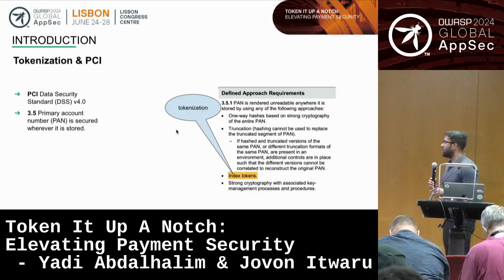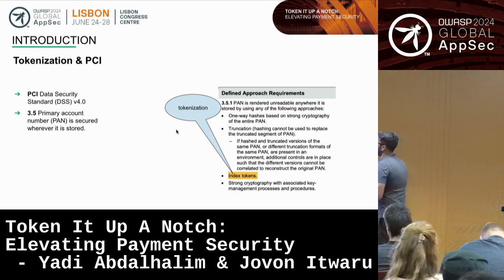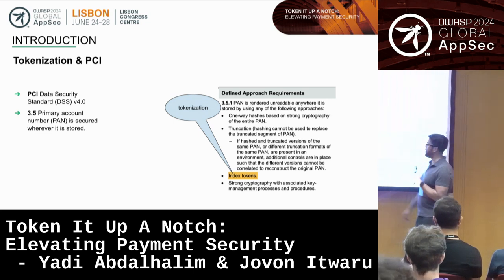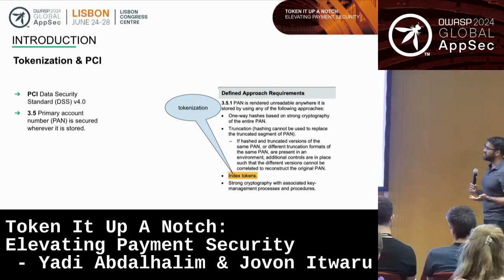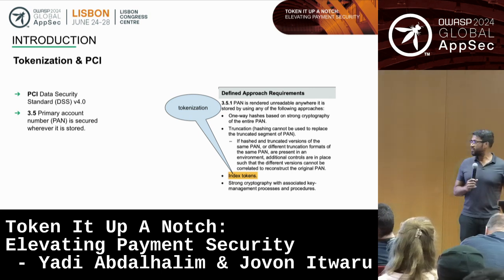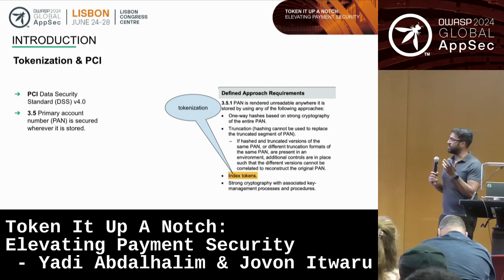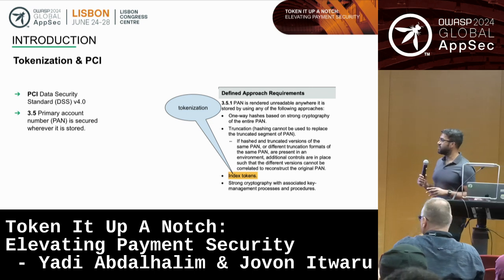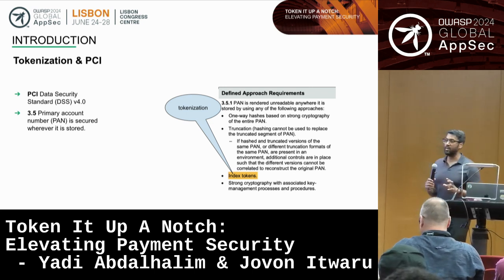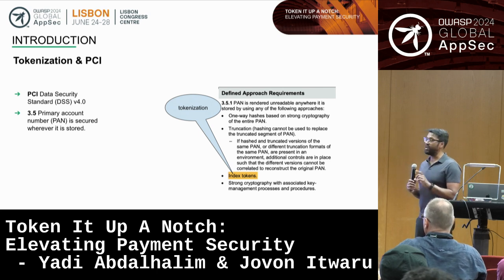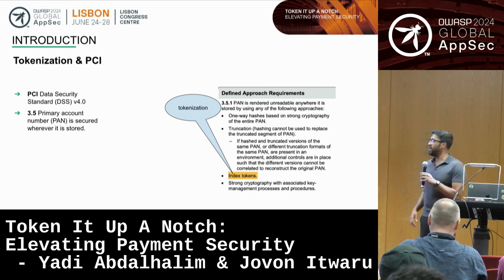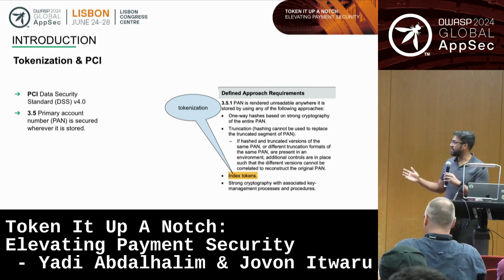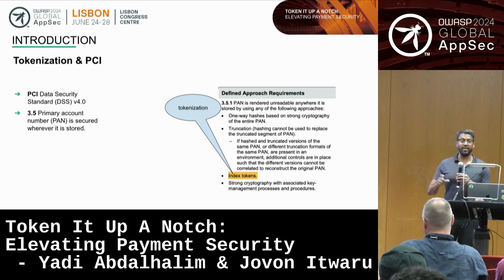The biggest thing to understand is something called index tokens — that really just means tokenization. It's one way to obfuscate the card number. You can use encryption, you can use hashing, or you can use index tokens. Index tokens are a way to obfuscate the card number by having a completely separate token where you can dereference the card. This gets the card number out of your environment and also prevents security risks if that token is leaked — if someone had the token, they couldn't go back and get the card number from it.